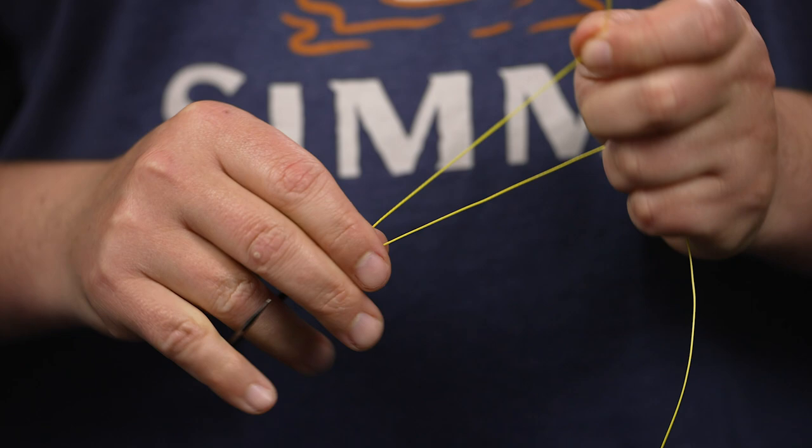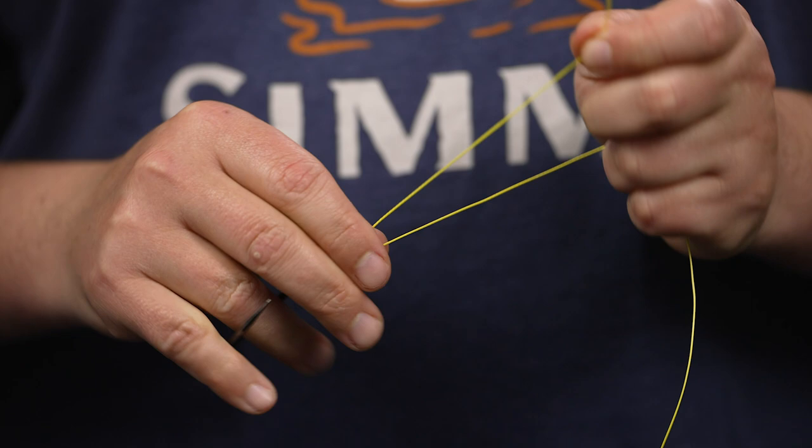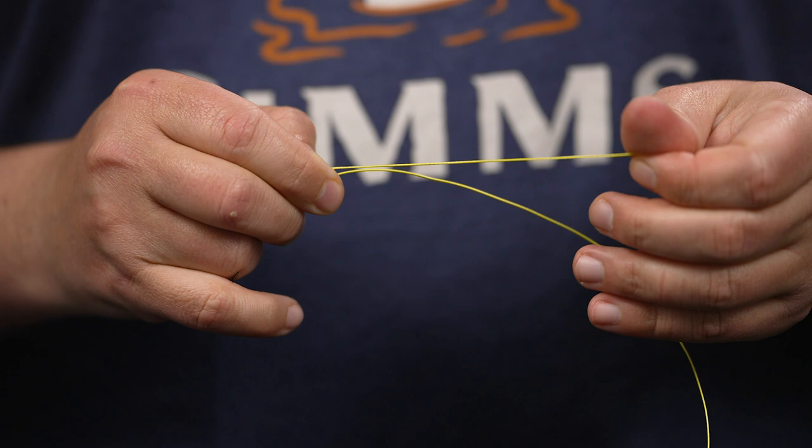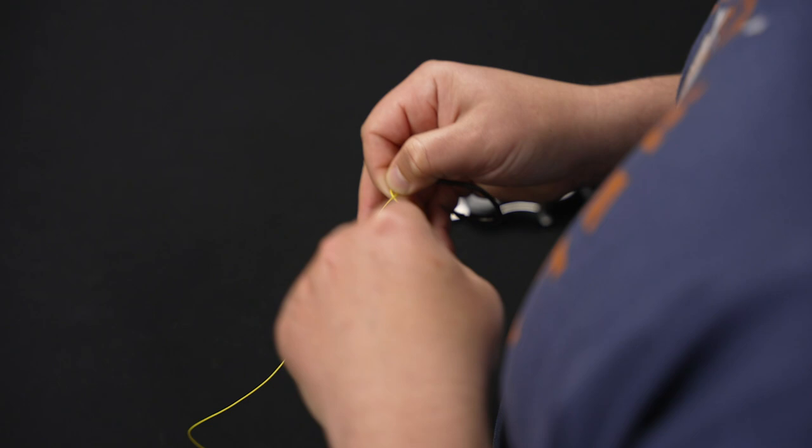Now the next step is I'm going to pinch the line right above the eyelet just to maintain control of the line. Now the next step is I'm going to wrap the tag end around the main line going upwards five to seven times. Depending on what line size you're using, if you're using lighter line you want to go more wraps, heavier line less wraps. So I'm going to go five wraps for this demonstration.